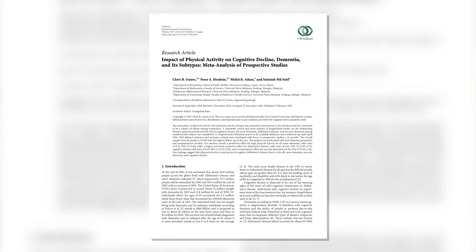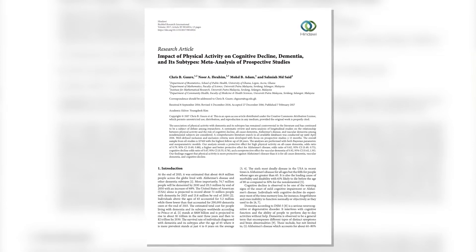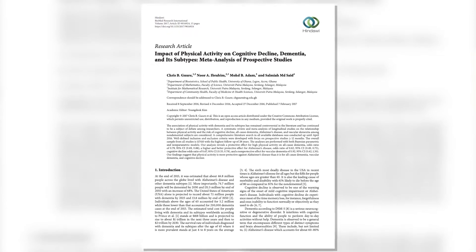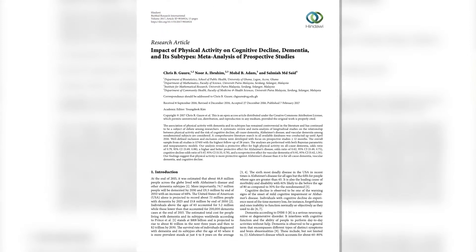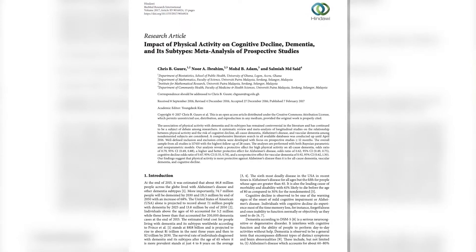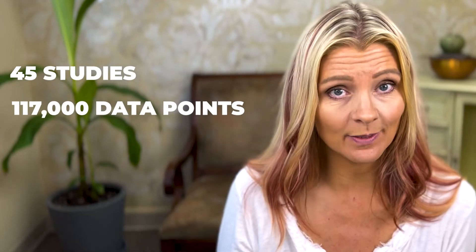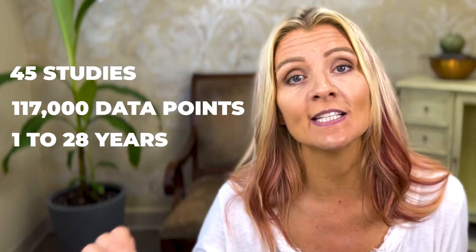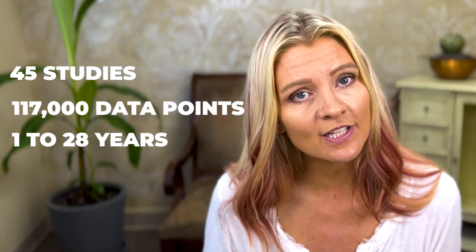One such meta-analysis was published in 2017 in the peer-reviewed journal Biomed Research International. It looked at 45 different studies, 117,000 data points, and spans of time lasting 1 to 28 years that people were followed to understand the impact of exercise on brain functioning. Their striking results showed that people who exercised the most compared to those who exercised not at all or very little showed a 38% reduction in risk of developing Alzheimer's disease.